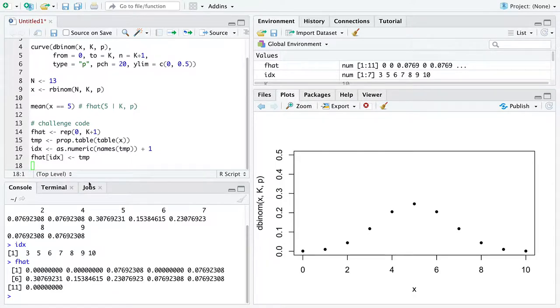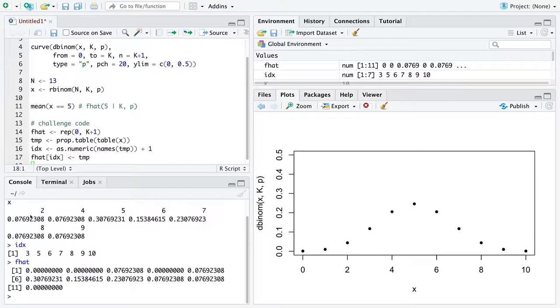What we essentially have done is taken all of these proportions. You can see here's the proportion we calculated originally that estimates the density function at the value five. It just shows up here. We've essentially repeated this calculation, the mean of x equals equals some number, across all the different values that x has taken on. And then by taking the indices associated with those values, we are storing them into f hat.